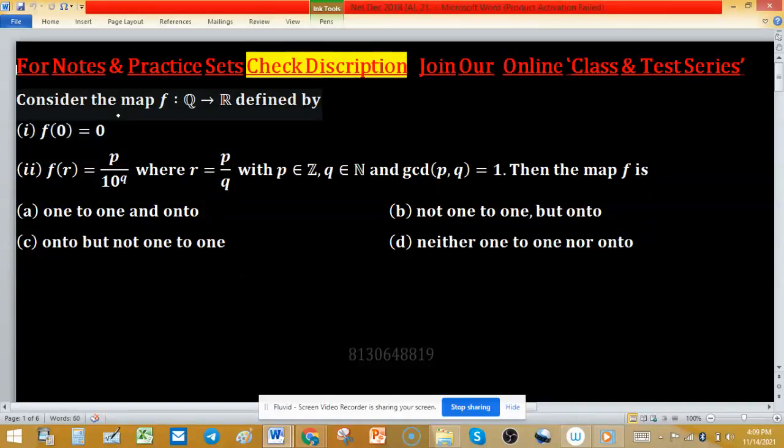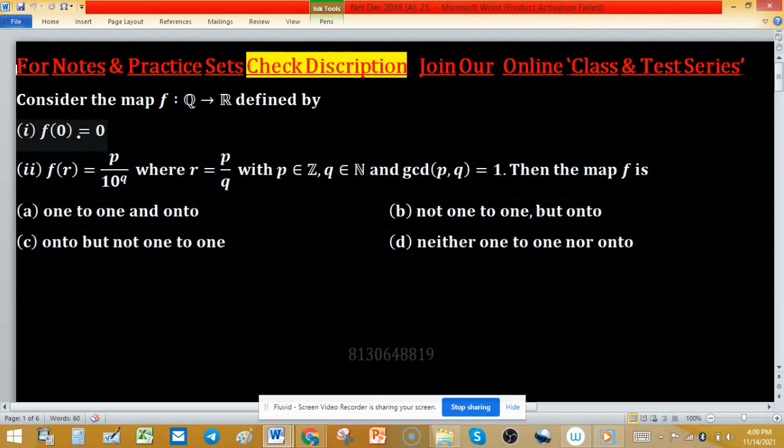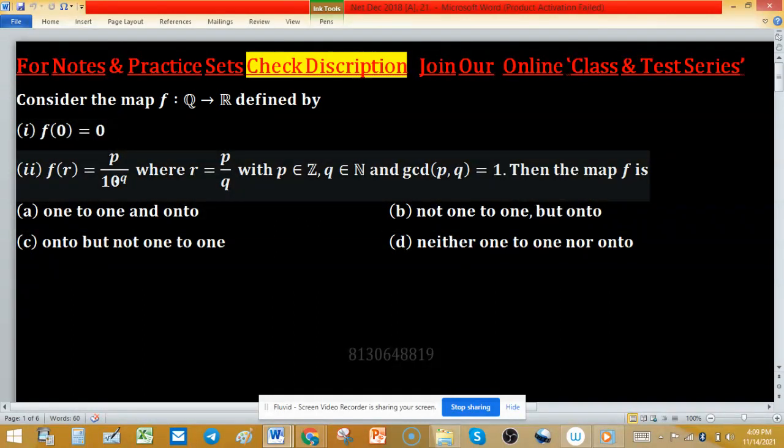Consider the function f defined from set of rational numbers to set of real numbers. The defining structure of f is f(0) equal to 0, and f(r) equal to p upon 10 raised to the power q, where p belongs to set of integers and q is coming from set of natural numbers, and p and q are coprime.